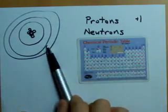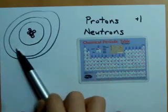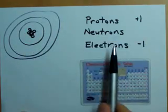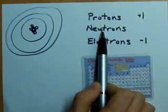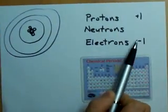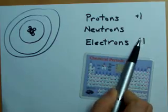In the empty space orbiting around the nucleus, you'll find electrons. Electrons are much, much smaller than either protons or neutrons, but they have a charge of negative 1.